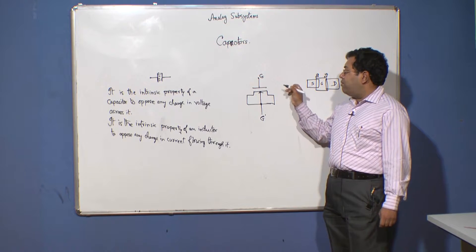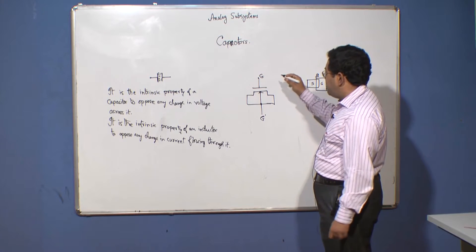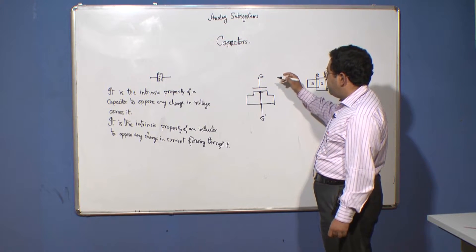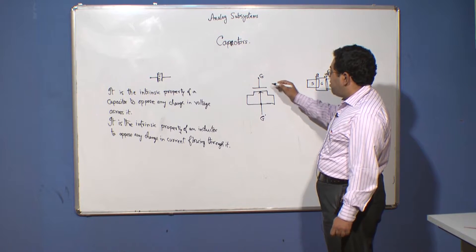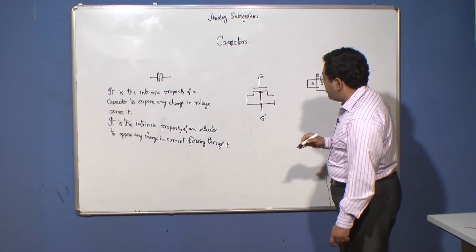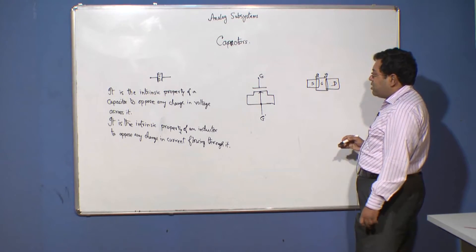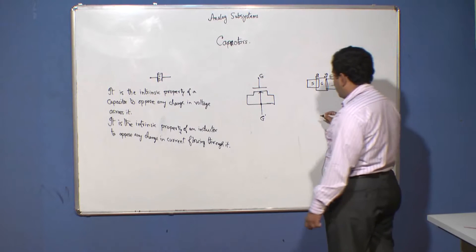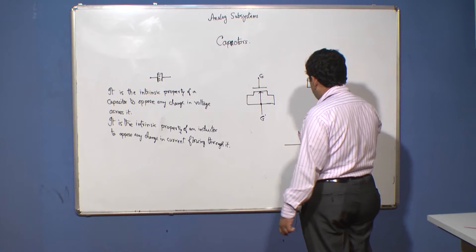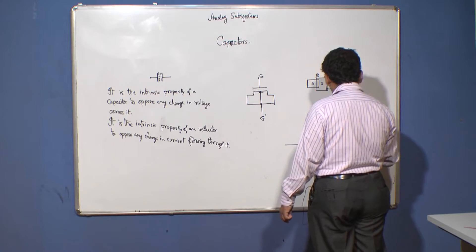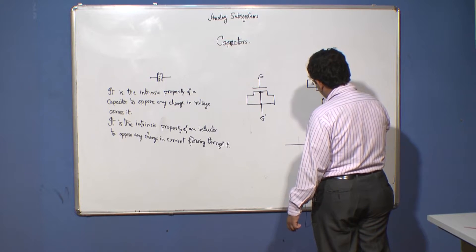For this MOS capacitor, it is very important to study the capacitance versus voltage (C-V) characteristics. We plot the C-V characteristics of the MOS transistor.